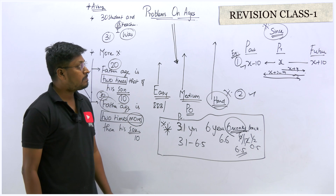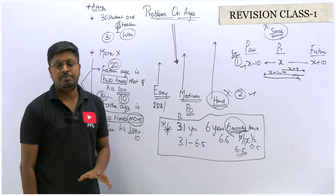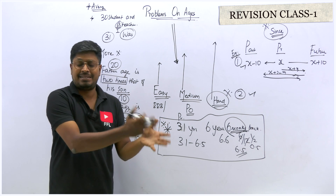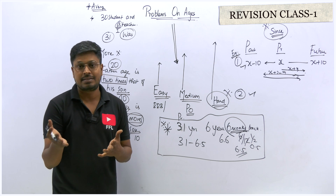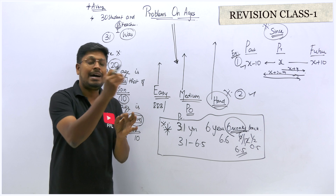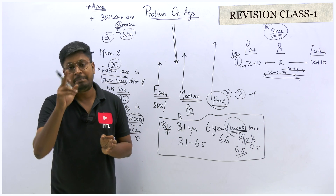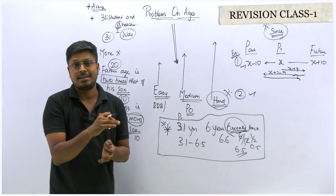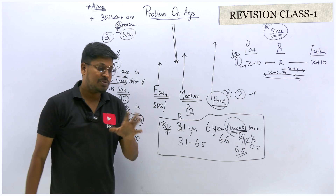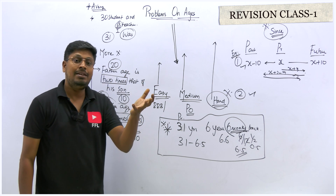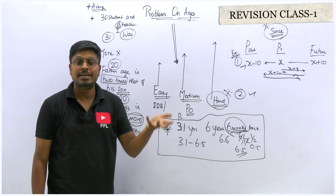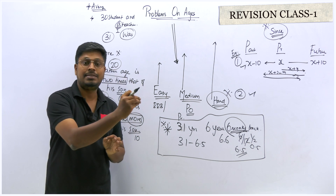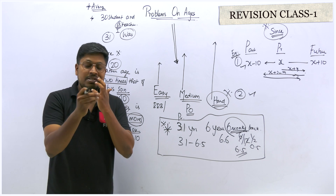Students usually make mistakes in Problems on Ages after finding the answer. After solving and getting the value of x, always check what the question is asking — whether it's asking the present age, or a past or future age. We may have found the future age but the question asks for the past age. Many students find the present age and mark it, but the question asks '10 years back what is the age of the father', so you have to subtract 10. Always re-read the question after solving.